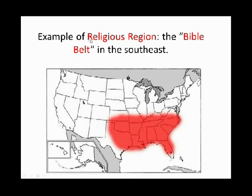This is an example of a religious region. It's called the Bible Belt, and it's in the southeast. Basically the majority of the population there is Christian, and the Bible is a holy book of Christianity. This is not to say that there are not people from other religions who live there, because there definitely are. But it's considered a region because the majority of people that live there are Christian.